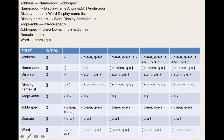We check if the token type is in the first set of name-address — which contains less-than, atom, and quoted-string. This check allows us to write code that looks very similar to the grammar rules themselves.